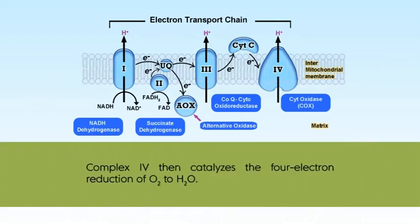Complex 4 then catalyzes the 4-electron reduction of molecular oxygen to water. Electron transport at Complexes 1, 3, and 4 is coupled with proton translocation from the mitochondrial matrix to the inner membrane space. The resulting proton motive force is used by Complex 5, that is ATP synthase, to generate ATP from ADP and inorganic phosphate.